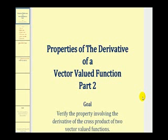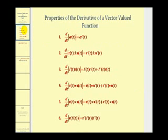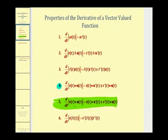Welcome to part two of the properties of the derivative of a vector valued function. The goal of this video is to verify the property involving the derivative of the cross product of two vector valued functions. In the previous video we briefly discussed these six properties and showed the proof for property four. For this video we're not going to prove property five but we are going to verify it using two different vectors. We won't show the proof but we will show verification with an example.